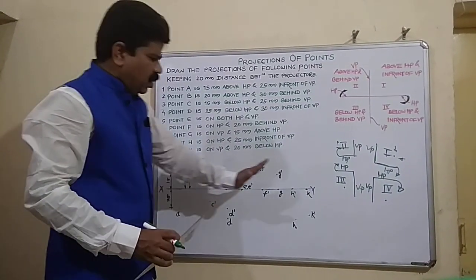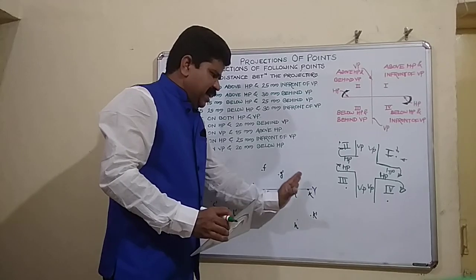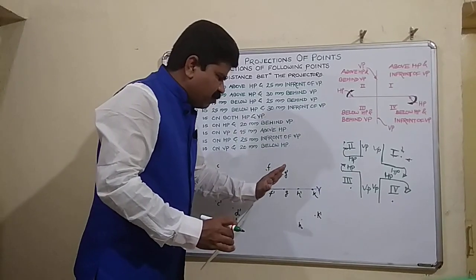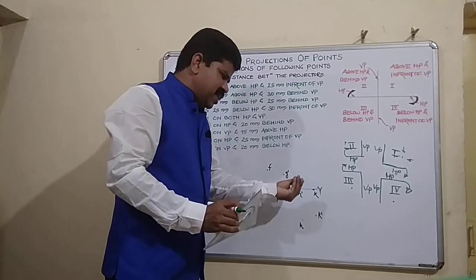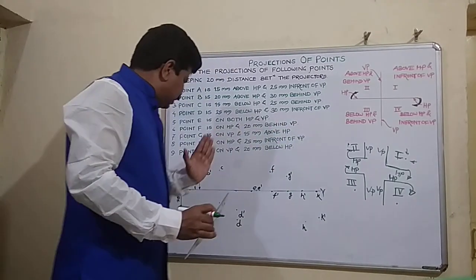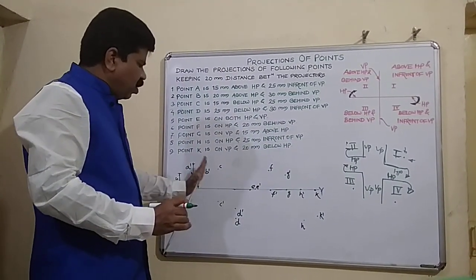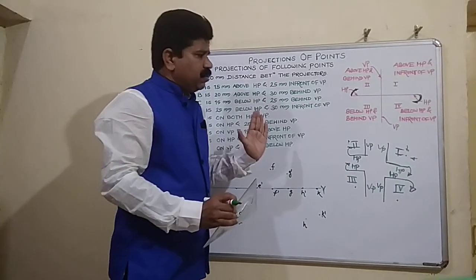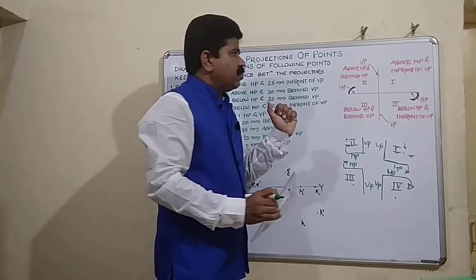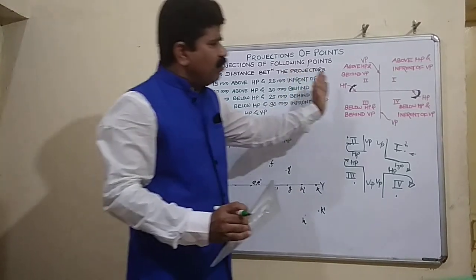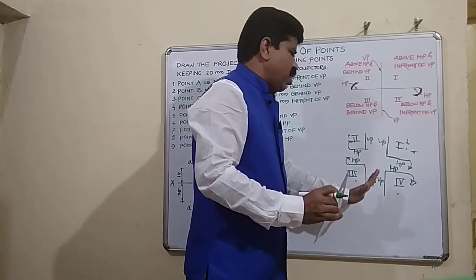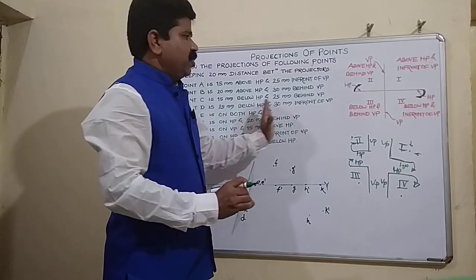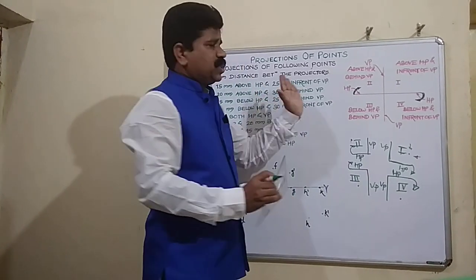Students, remember: while showing projections on the XY line, always use small alphabets, not capital letters. Show proper notations — dash for front view, plain alphabets for top view. Show dimensions either on the left side or right side, following the proper dimension method. I have now covered projections of points in all four quadrants, as well as combinations involving planes. Hope you understood projections of points clearly.